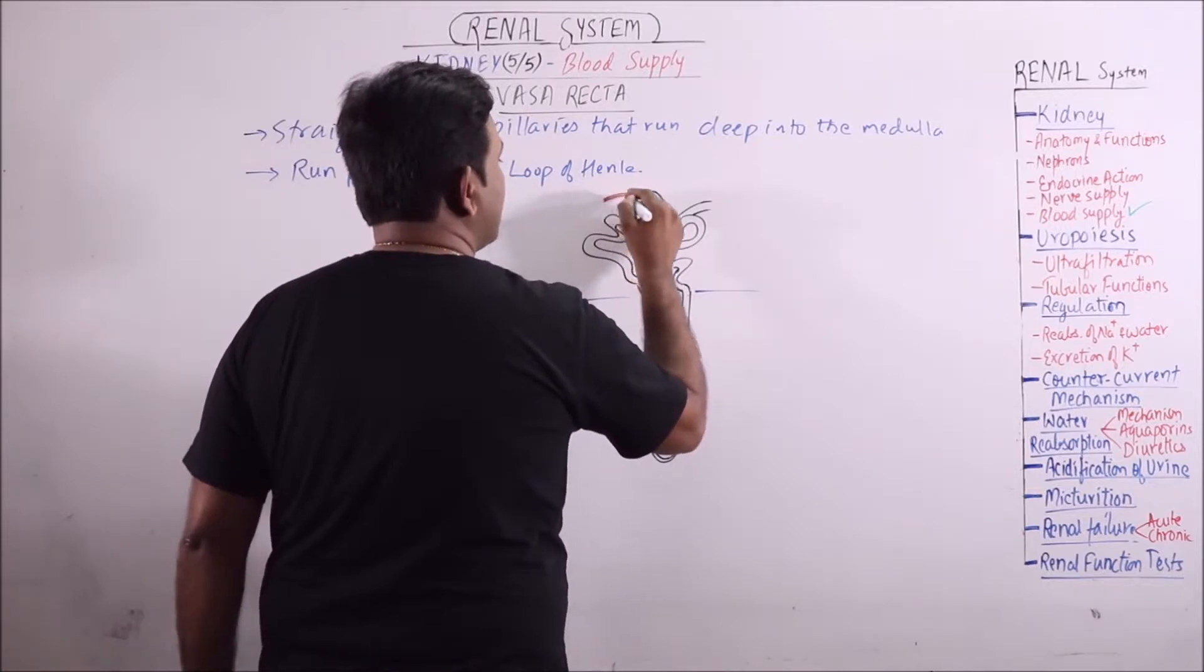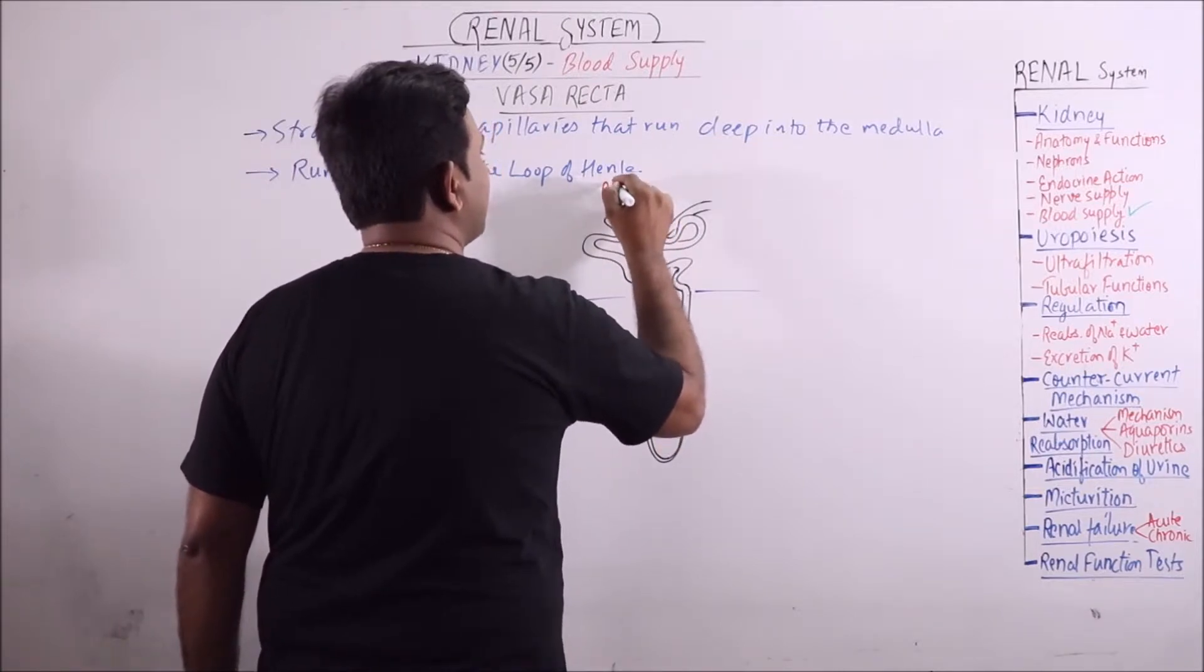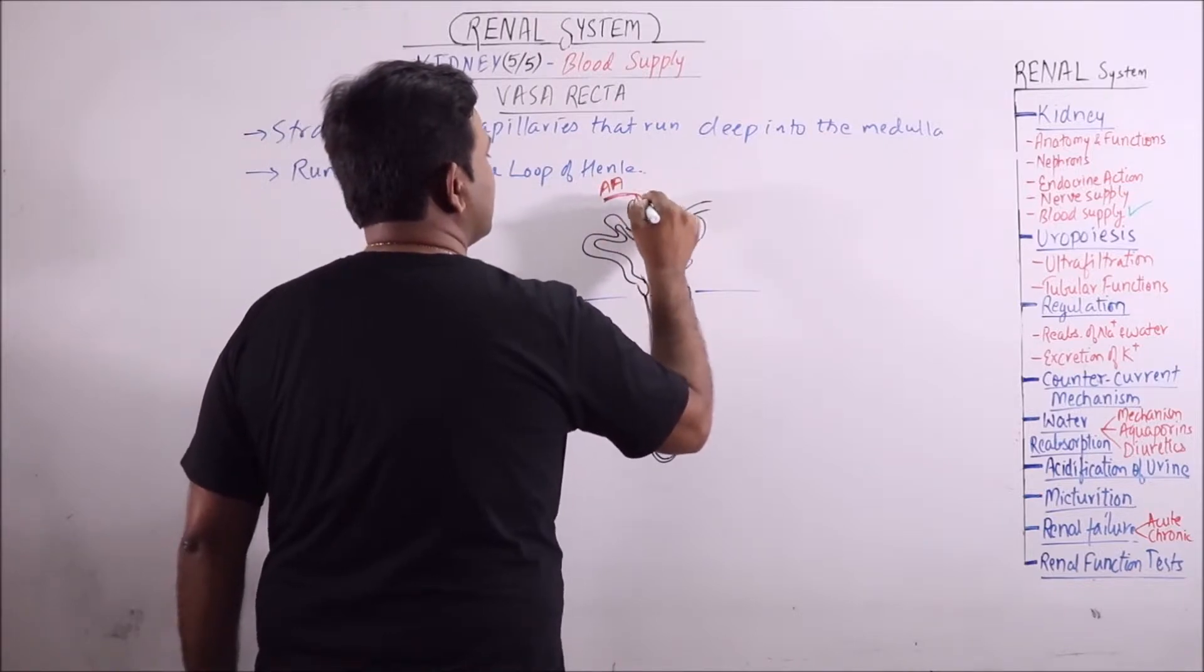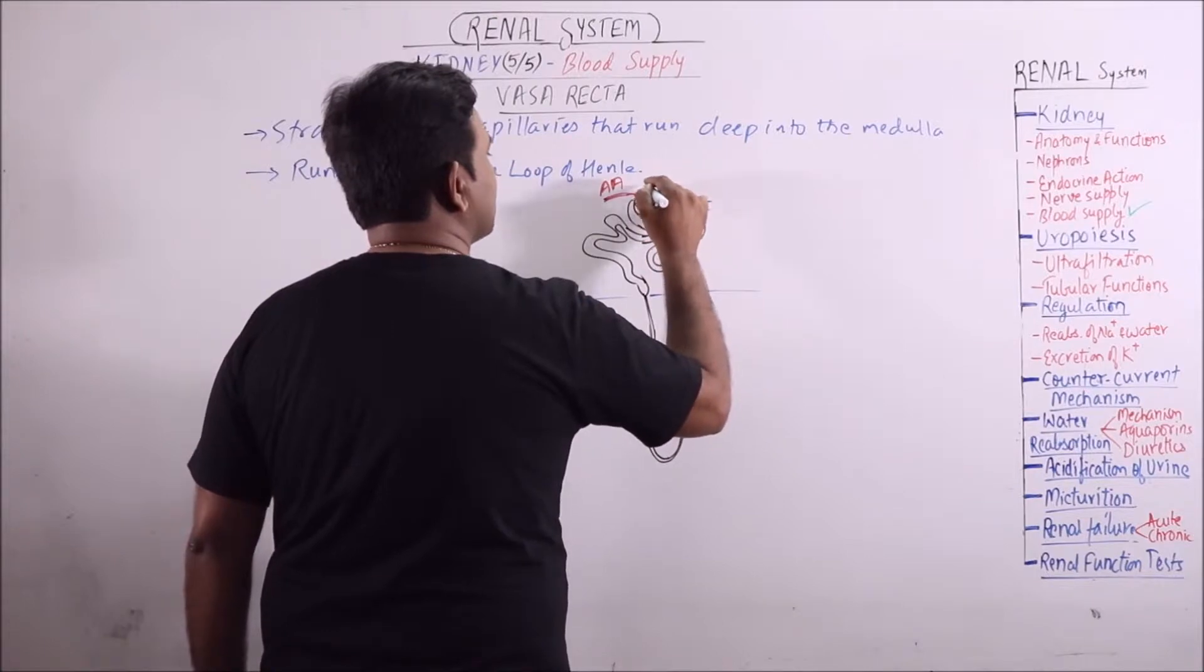So this is the afferent arteriole. This is the glomerulus and here comes the efferent arteriole.